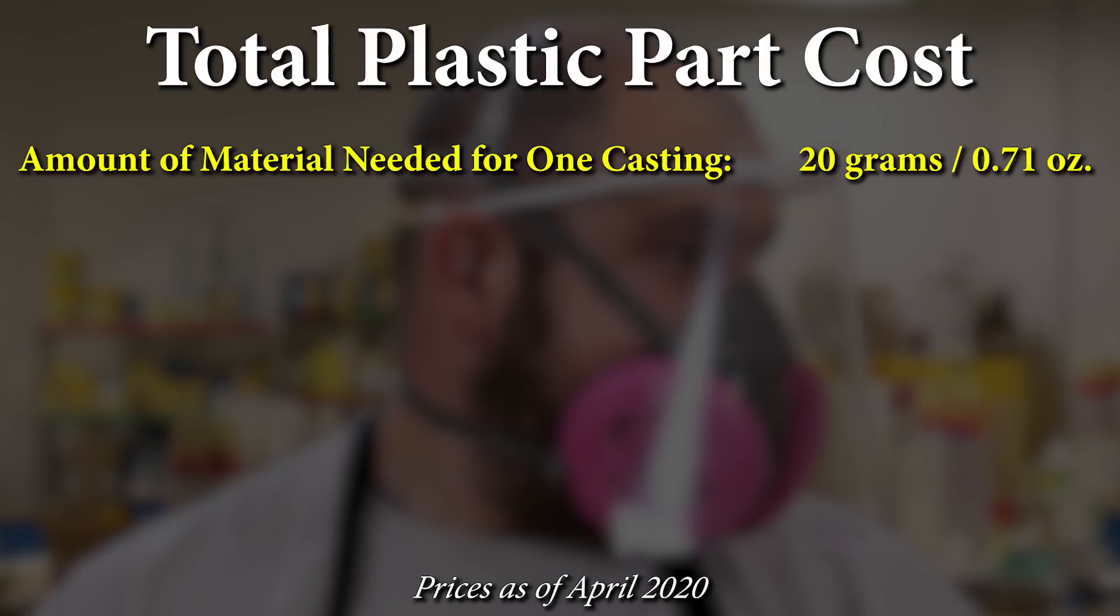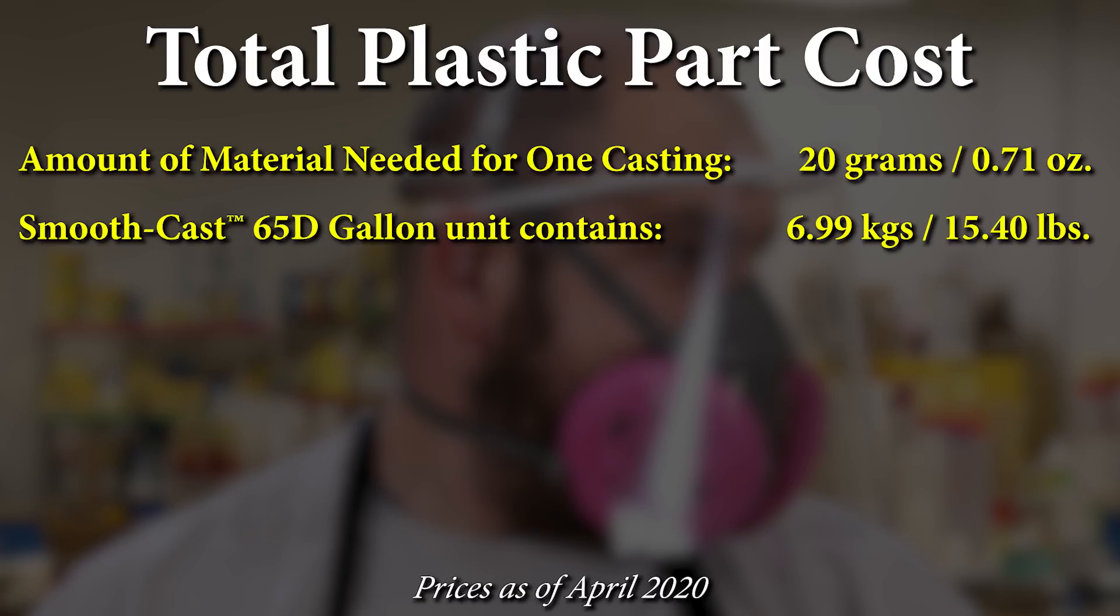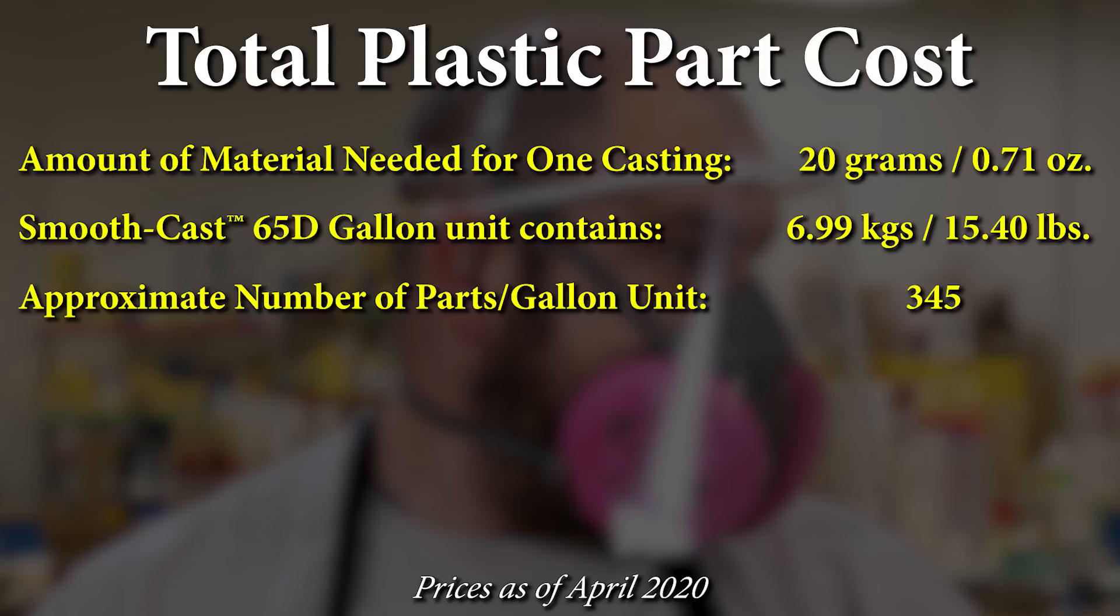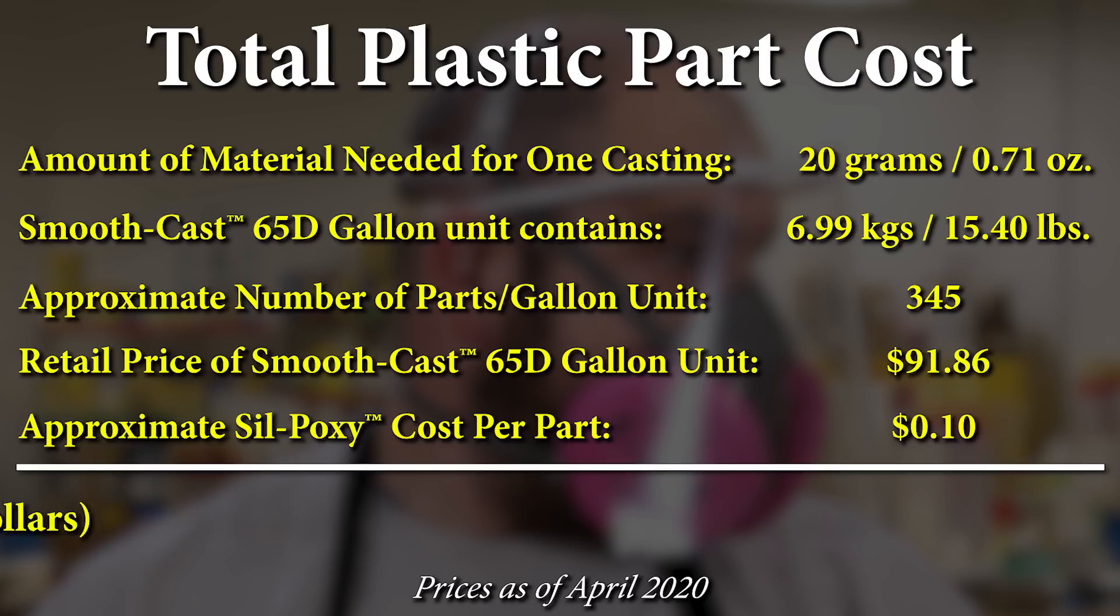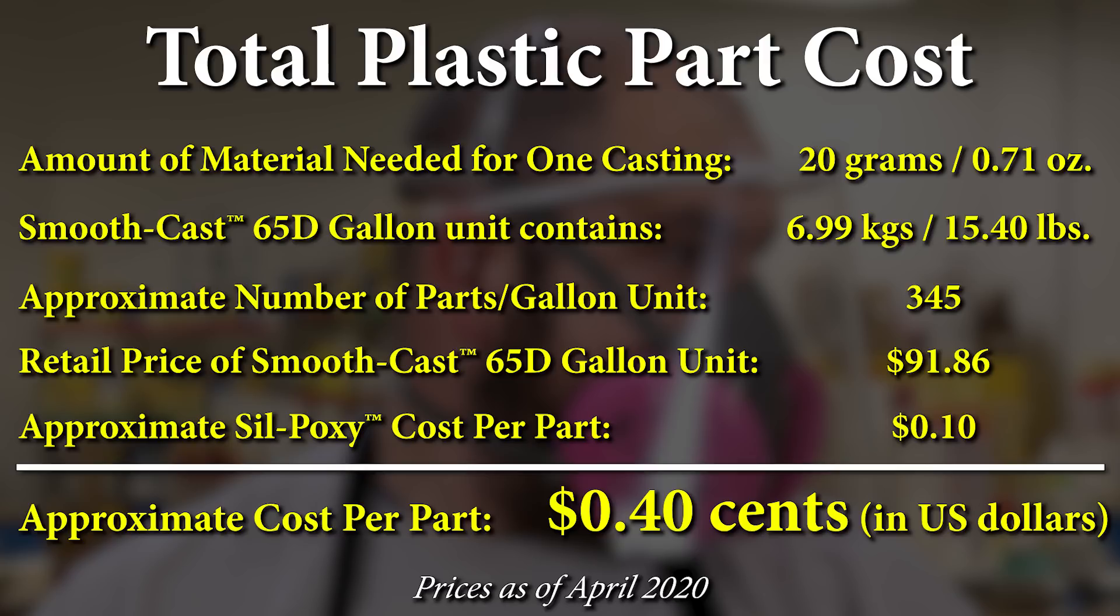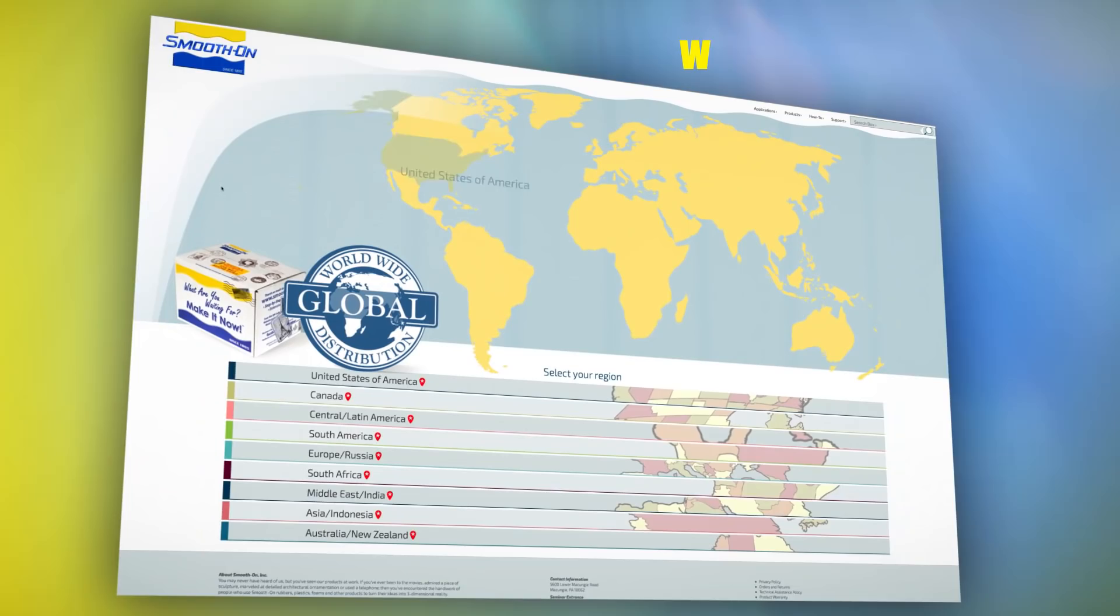Each casting we made using the 65D was 20 grams of material. If we take a gallon unit of the SmoothCast 65D, which contains 15.40 pounds of material, we were actually able to make about 345 pieces out of that material. Silpoxy, which adds another 10 cents in the cost, brings approximately the price per unit to 40 cents, which is quite incredible if you think how many castings we were able to get out of this gallon unit.